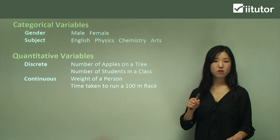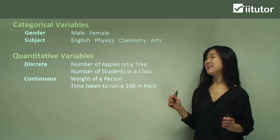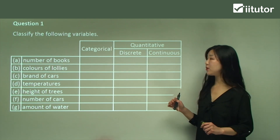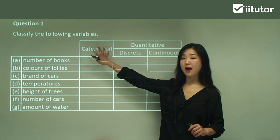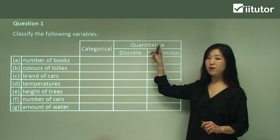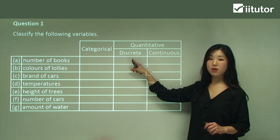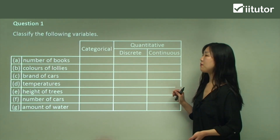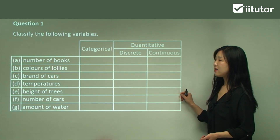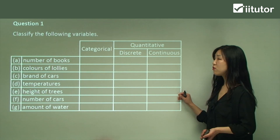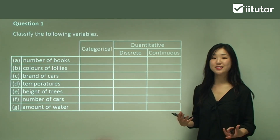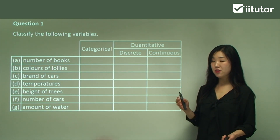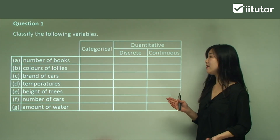Now we're going to try to classify some variables. Question one says: classify the following variables. I've set up a table with categorical, and quantitative discrete or continuous as options. Let's do A — number of books. Number of books is a quantity, so it's quantitative. Can we count the number of books? Definitely — so it must be discrete.